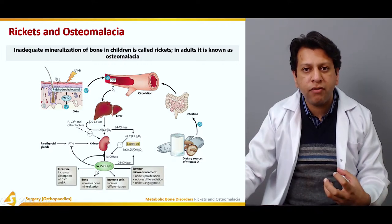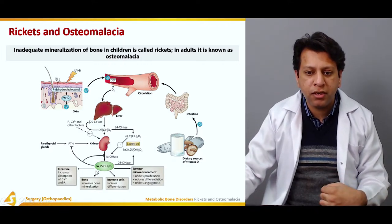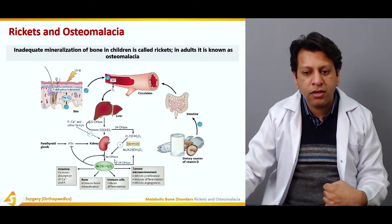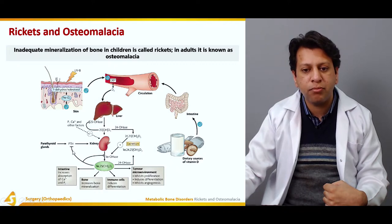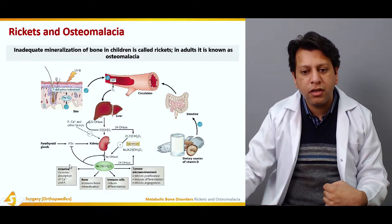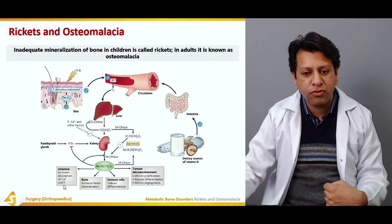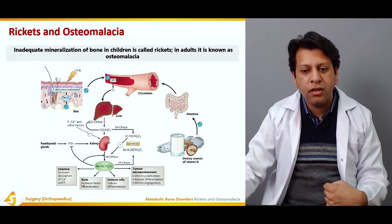In the kidneys, the enzyme 1-alpha hydroxylase converts 25-hydroxy D2 into 1,25-dihydroxy D3 — this is the activated form of vitamin D. It causes negative feedback decreasing PTH secretion, increases absorption of calcium and phosphorus from the kidney, and increases bone mineralization.